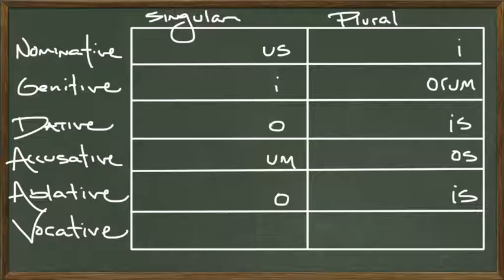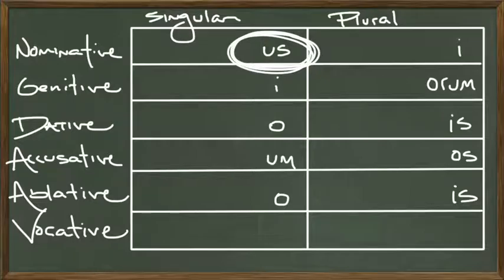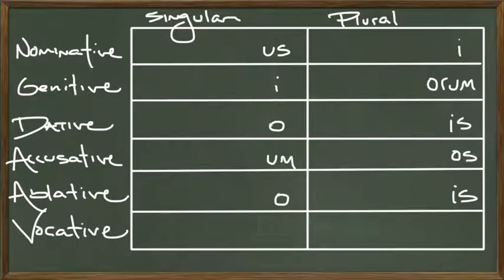In this episode we're looking at second declension nouns. Second declension nouns are usually masculine and usually end with us in the nominative. For example, if I wanted to say horse in Latin using the classical word for horse, I would say equus. And notice it ends with us.